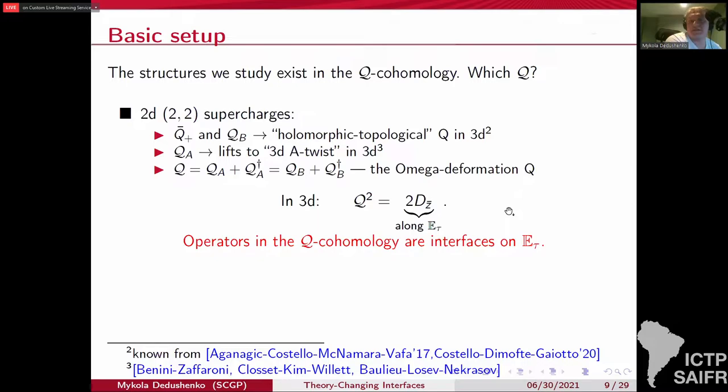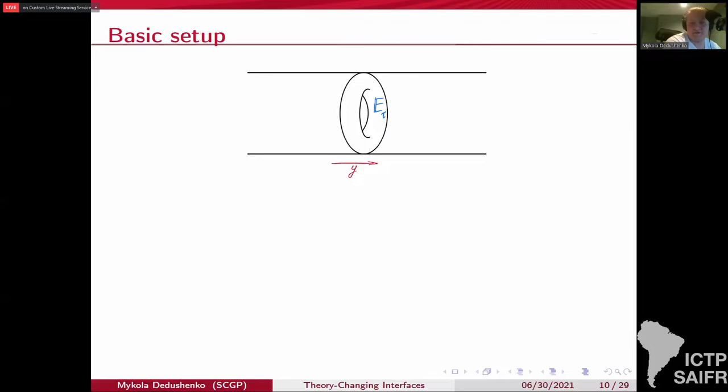We'll be studying its cohomology. Operators in the Q cohomology are clearly extended objects. They must wrap this E_tau. They will be interfaces. You also can alternatively think of it as a 3D N=1 supercharge.